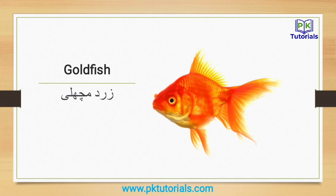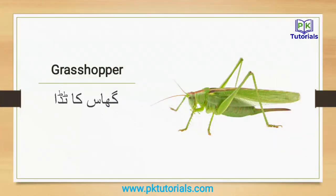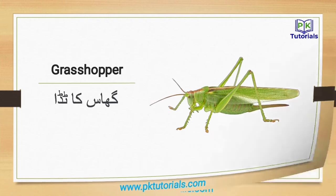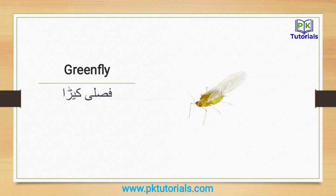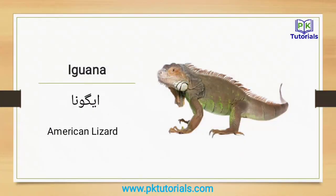Goldfish: zard machli ya suneheri machli. Grasshopper: gas katedda. Green fly: fusli kira. Iguana: igona — it's an American lizard, American chappli.